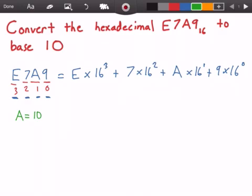B is equivalent to 11, C is equivalent to 12, D is equivalent to 13, E is equivalent to 14, and F is equivalent to 15. So that means I can replace E with 14 and A with 10.